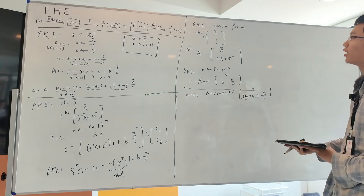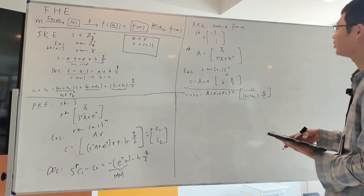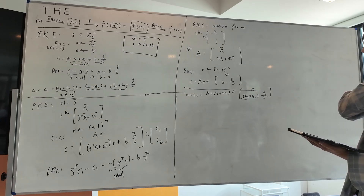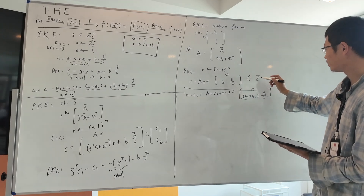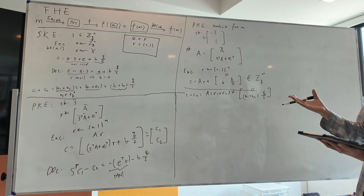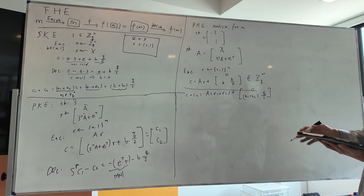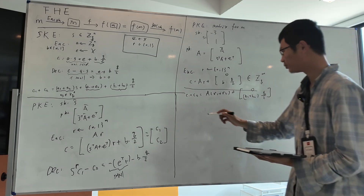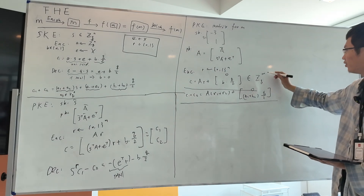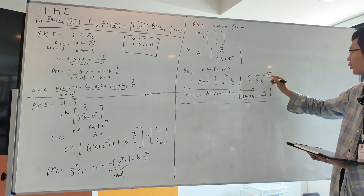But this scheme is not multiplicative homomorphic. In order to obtain a fully homomorphic encryption scheme, we require it to be both additive and multiplicative homomorphic. The reason it's not multiplicative homomorphic is that the ciphertext is a vector — we can define what it means to add two vectors, but multiplying two vectors is undefined. The way to achieve multiplicative homomorphism is to make the ciphertext a square matrix: then addition is matrix addition and multiplication is matrix multiplication, which is well-defined.